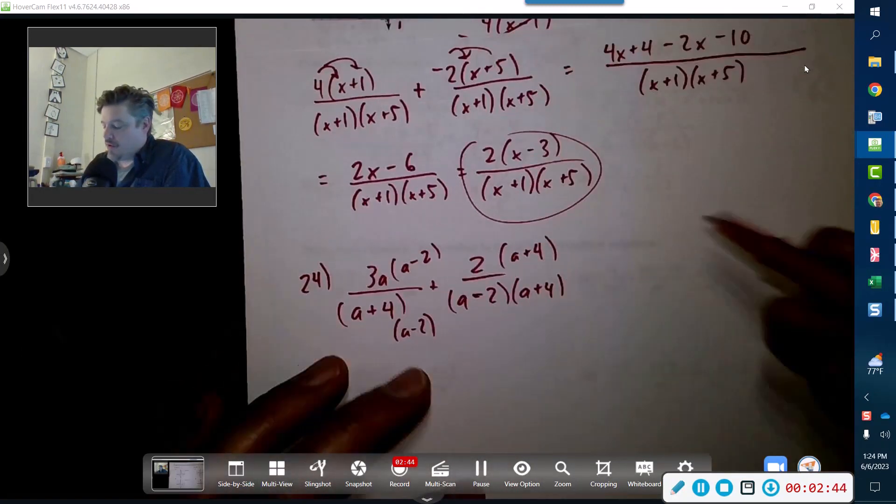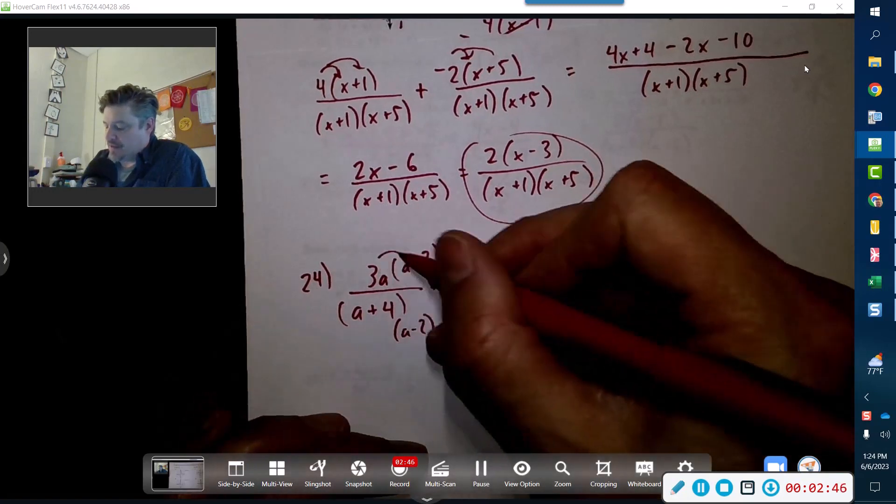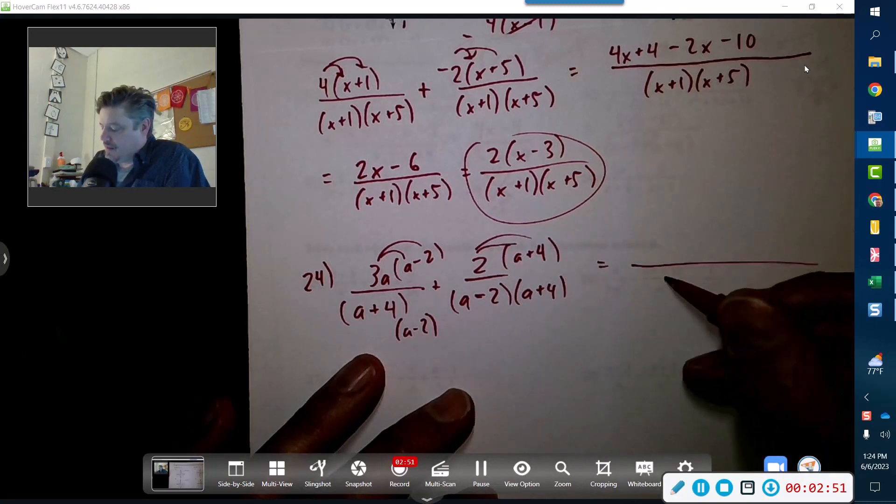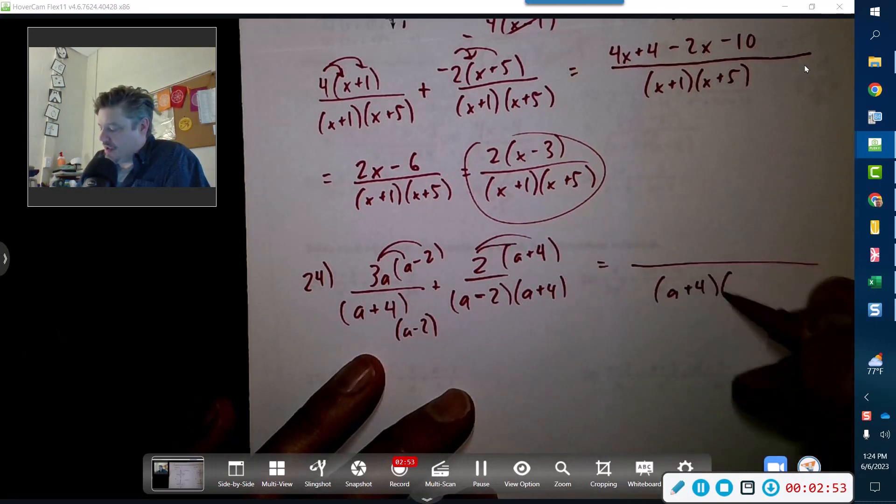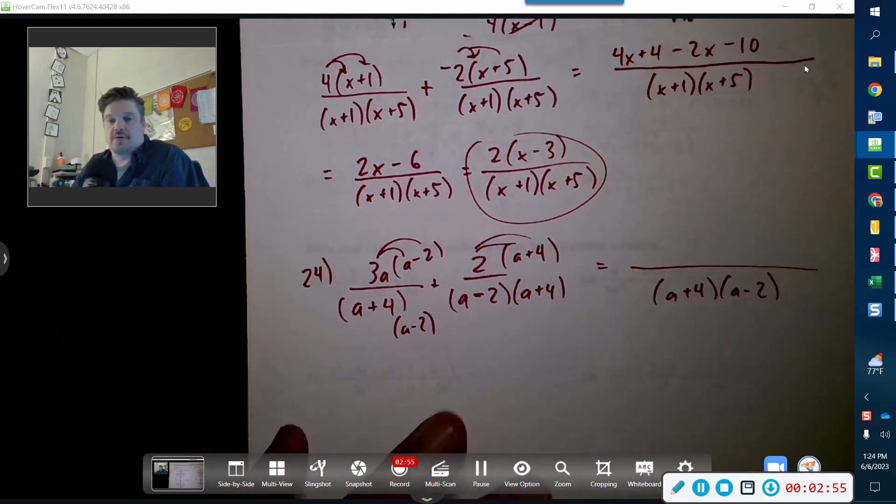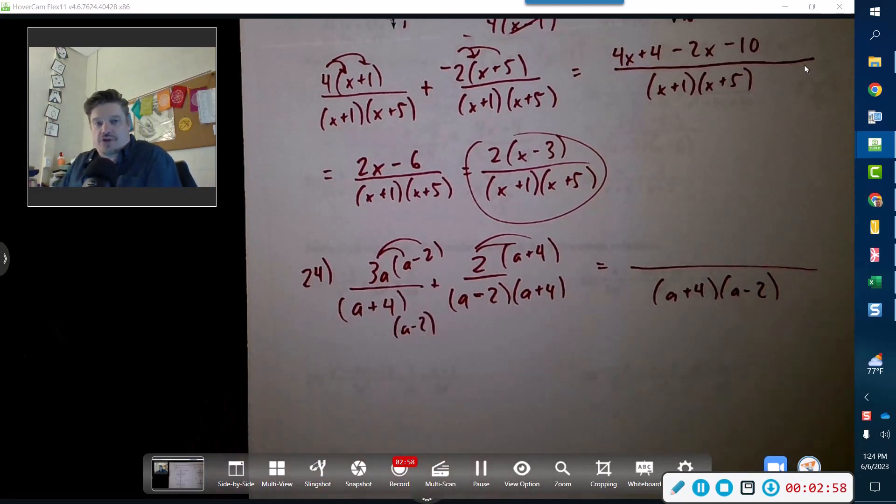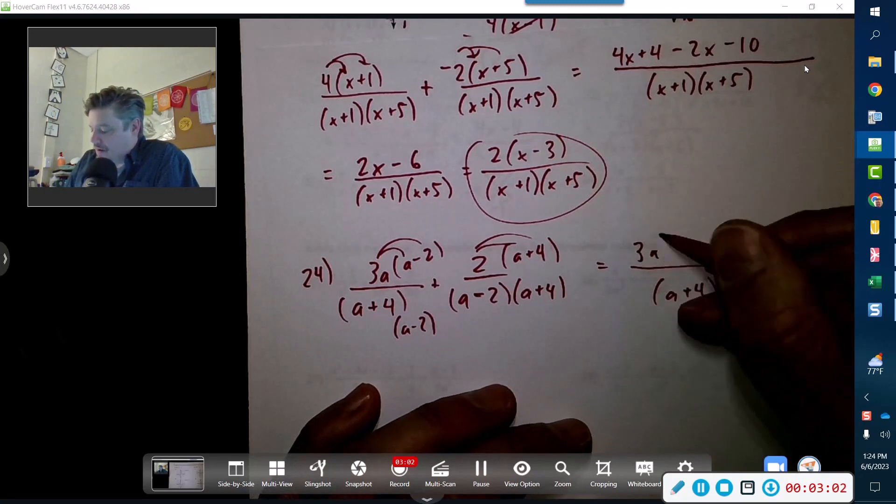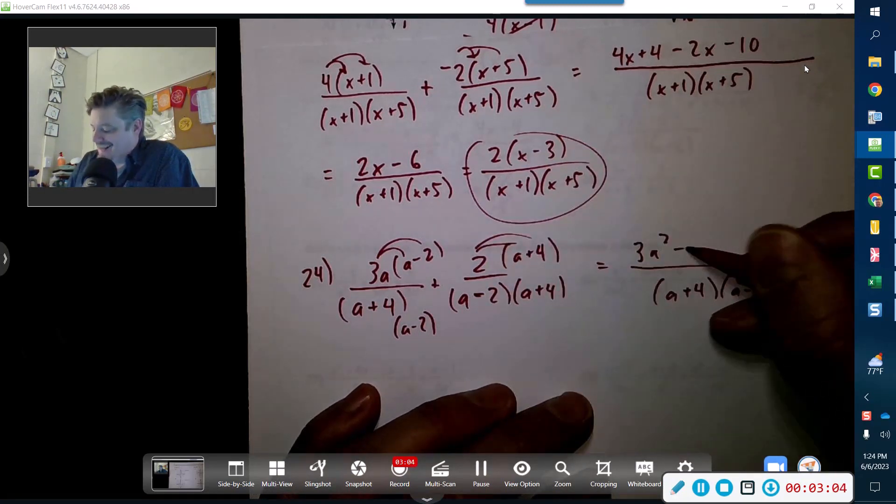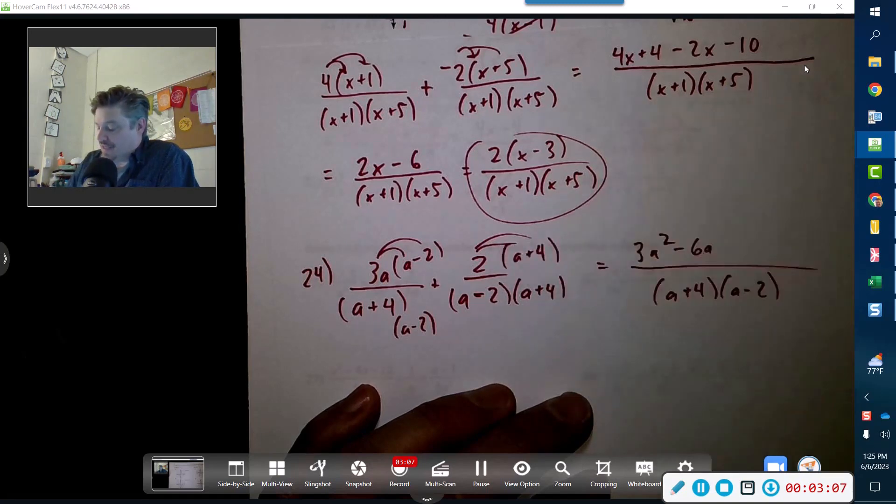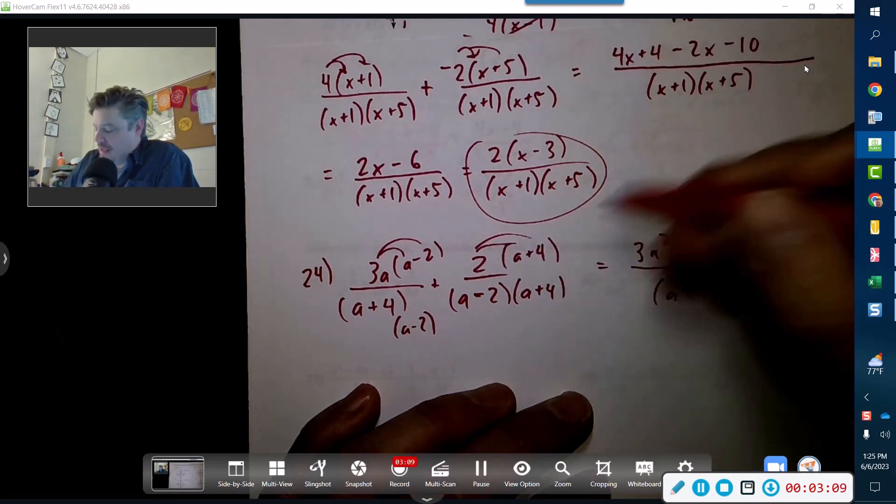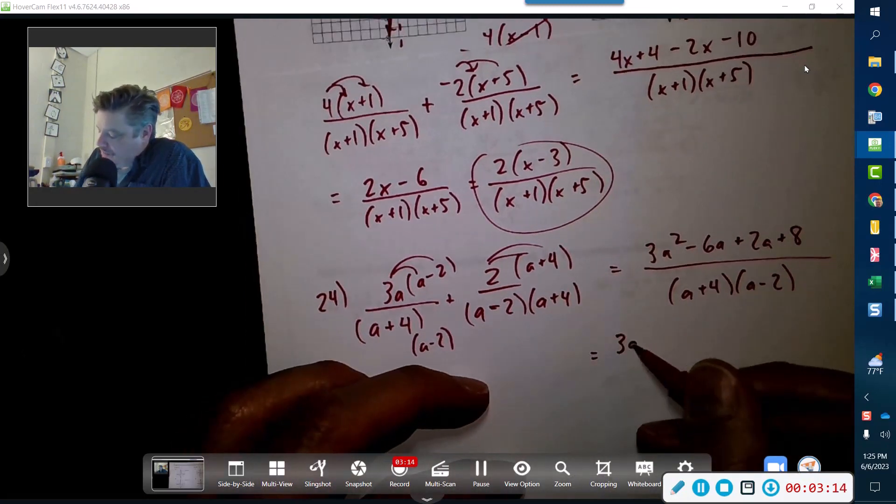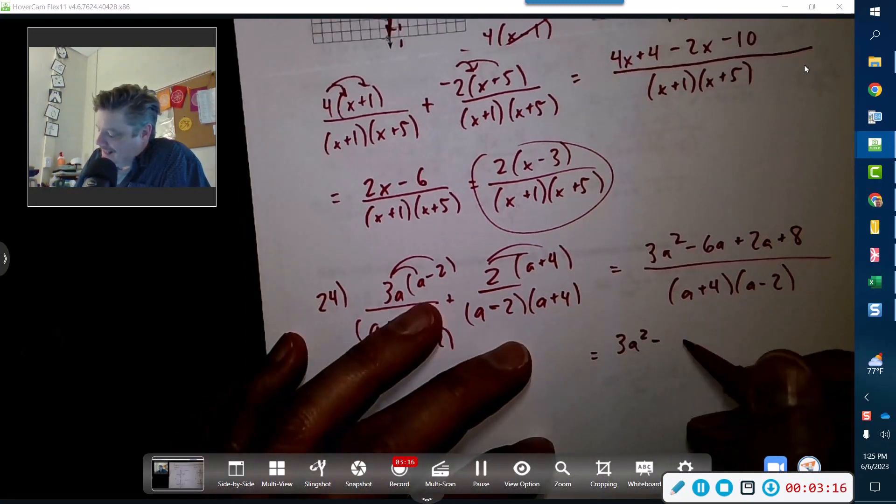Now I'm going to distribute those guys in just a second. Let's write this a plus 4, a minus 2 in the denominator. All right, now they're going to merge. So now 3a times a is just 3a squared, and then that would be minus 6a. And then 2 times a is just 2a, and then 2 times 4 is just 8. So let's merge those: 3a squared minus 4a plus 8 over a plus 4, a minus 2.